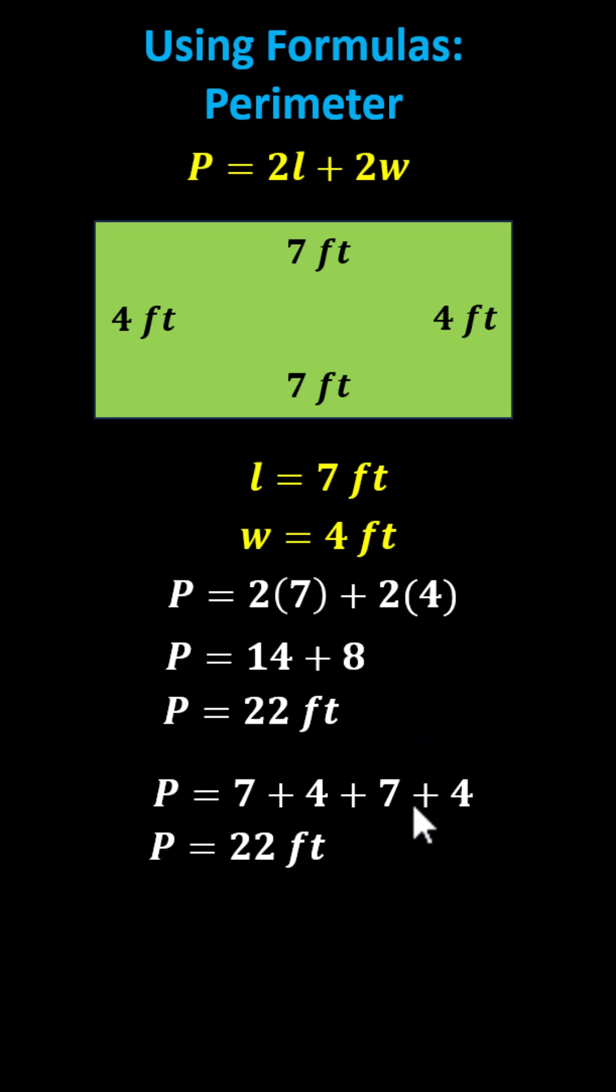We can also see why the formula is 2 times l plus 2 times w. There are two sides of length 7 feet and 2 sides of length 4 feet. I hope you found this helpful.